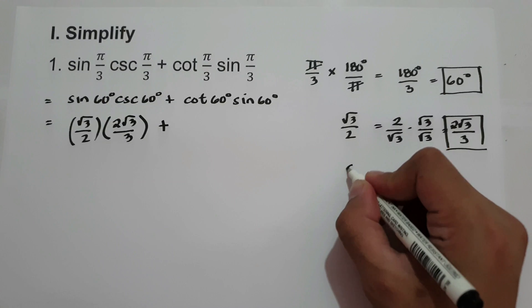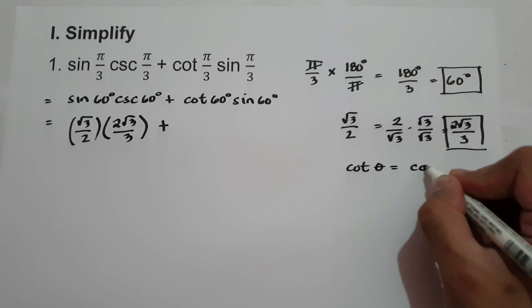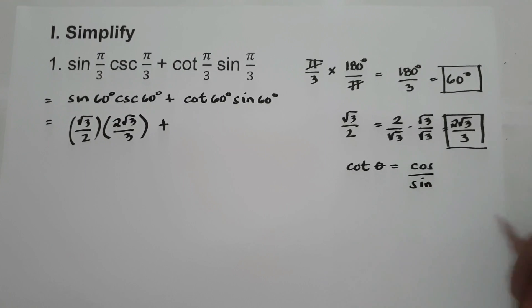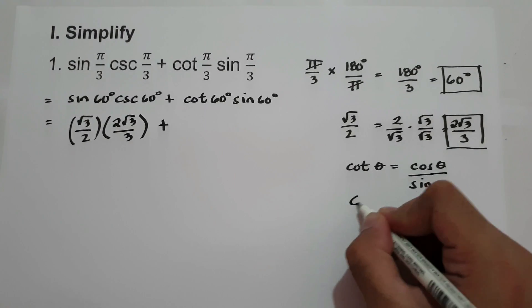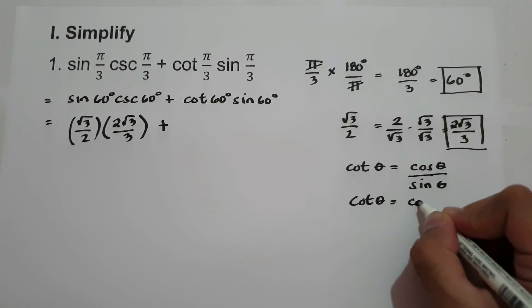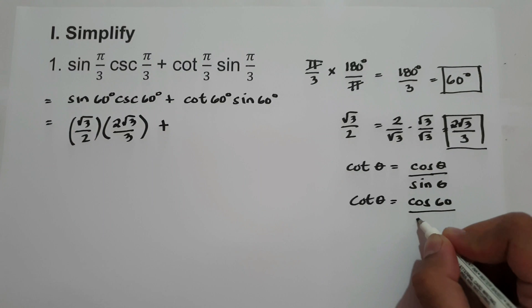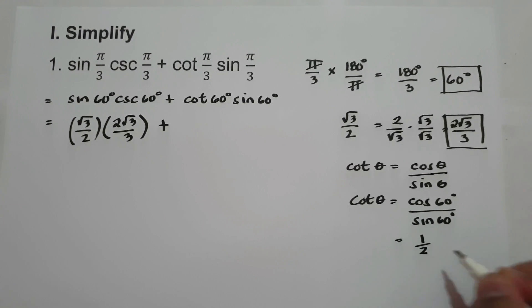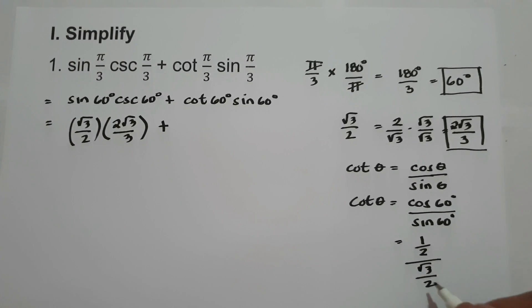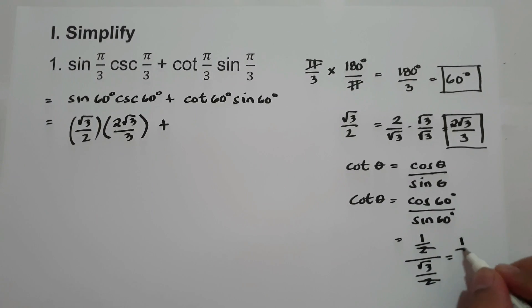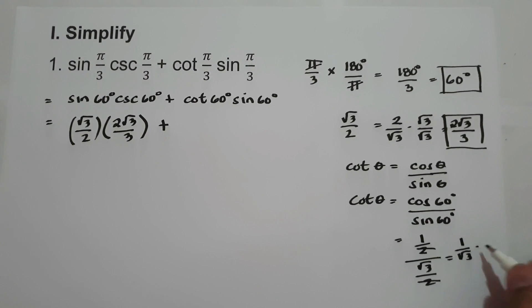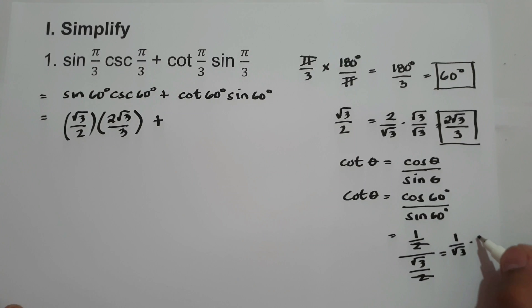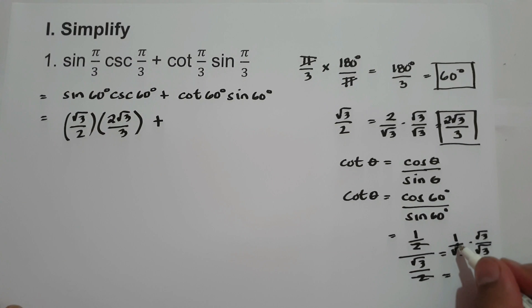Plus, cotangent is cosine over sine. For 60 degrees, that is cosine 60 over sine 60. Cosine 60 is 1 half, and sine 60 is square root of 3 over 2. Canceling the halves gives us 1 over square root of 3. We rationalize by multiplying square root of 3 on the numerator and denominator to eliminate the radical sign on the denominator.